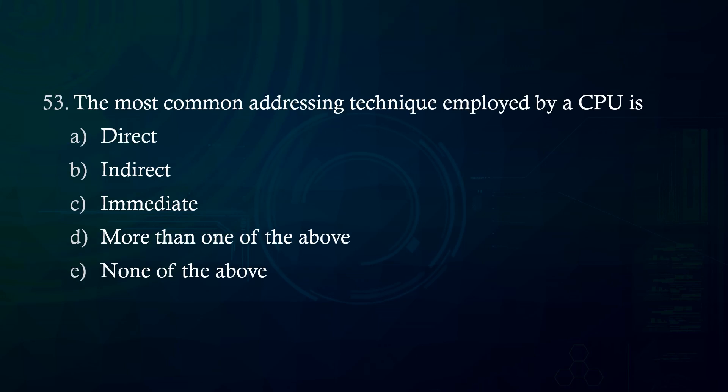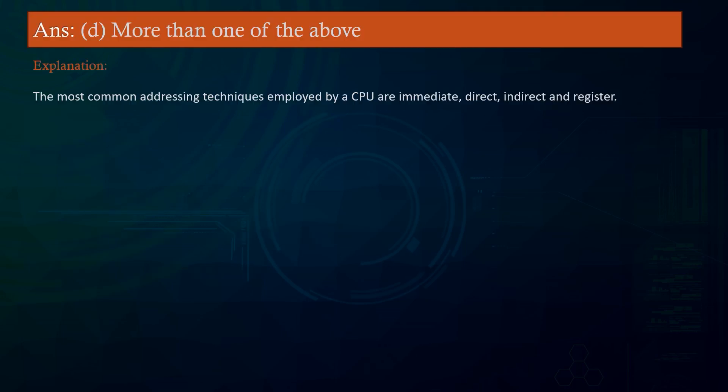The most common addressing technique employed by a CPU is: A. Direct B. Indirect C. Immediate D. More than one of the above E. None of the above. Answer: More than one of the above. Explanation: The most common addressing techniques employed by a CPU are immediate, direct, indirect, and register.